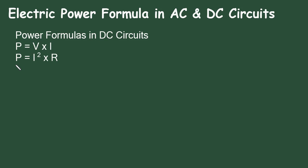Then also power is equal to I square into R. This I represents current and this R represents resistance. So if we put V is equal to I into R according to Ohm's law, then we get this formula.